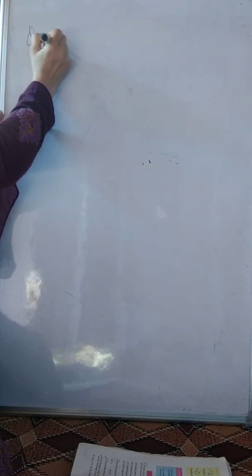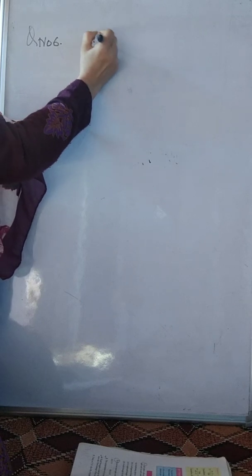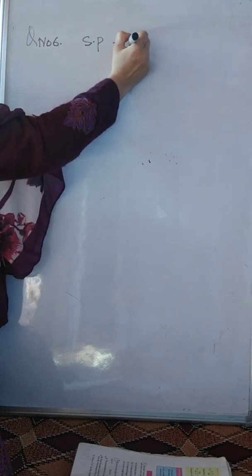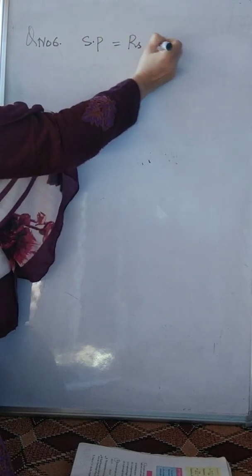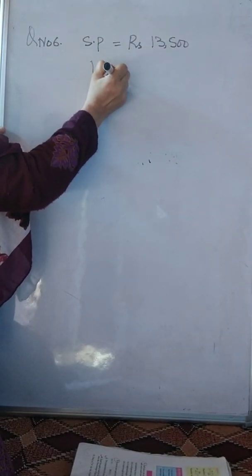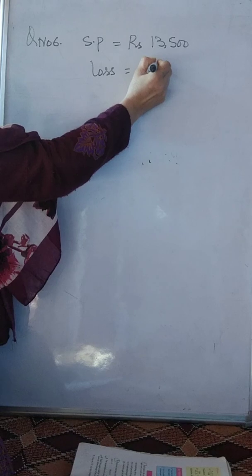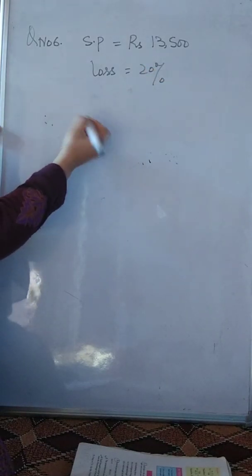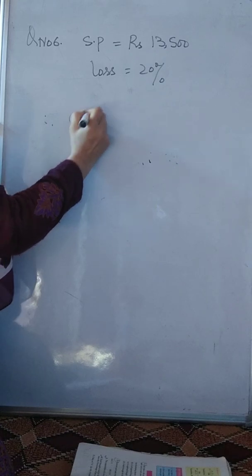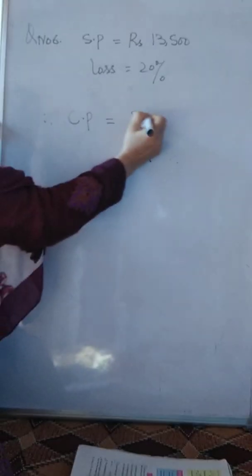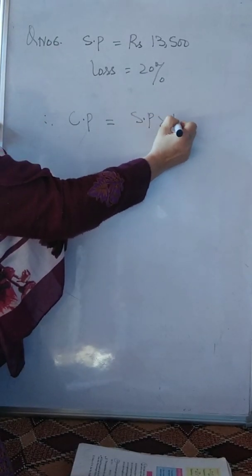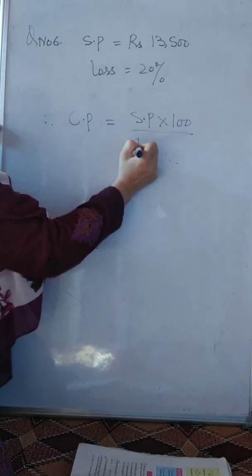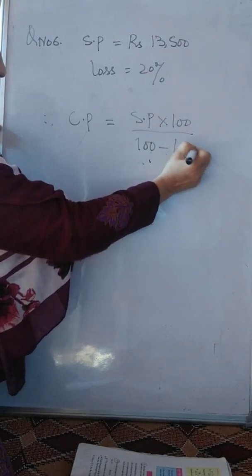Question number six. Washing machine beech dhee gai. Thirteen thousand five hundred. Bechinае mein loss hua hain. Twenty percent. Ab question hai. Batayee iska CP kya hai. Tuh uske liye formula hai. CP is equal to SP into hundred by hundred minus lost percent.